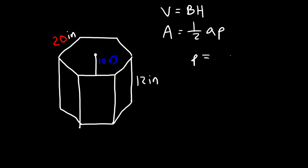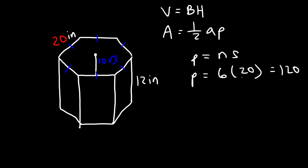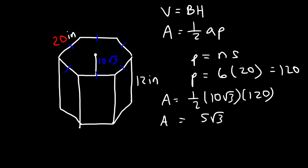The perimeter is simply N times the side length. A hexagon has 6 sides, and all are equal to each other, so N is 6. The side length is 20, so the perimeter is 6 times 20, or 120 inches. The apothem is 10 square root 3. So the area of the base is one half of the apothem times the perimeter — half of 10 is 5, and 5 times 120 is 600.